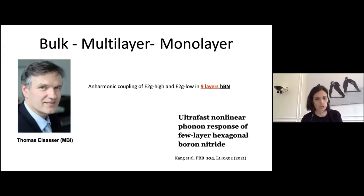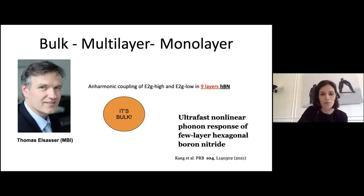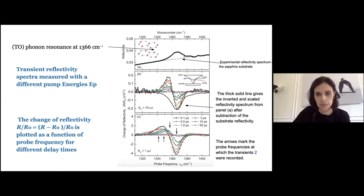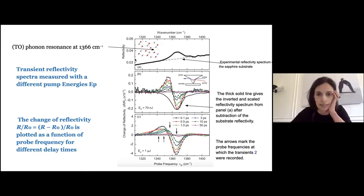This is interesting because I was contacted to evaluate the anharmonic coupling of the E2g (high) and E2g (low) modes — the R2 two-phonon modes — in hBN. They were doing a pump-and-probe experiment and asked me to evaluate the anharmonic coupling for nine-layer hBN. I assumed it was bulk — that was my mistake — because it was not bulk. The experiment was testing the reflectivity of the multilayer system.